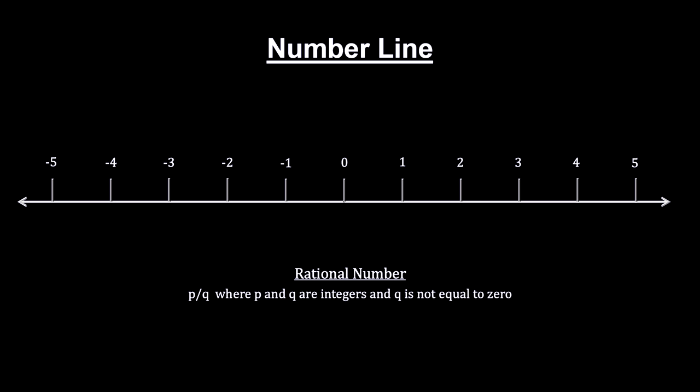The numbers that can be expressed as a ratio of integers, where the denominator is not zero. To map these numbers to the number line, we simply divide each segment into the number of sub-segments indicated by the denominator.